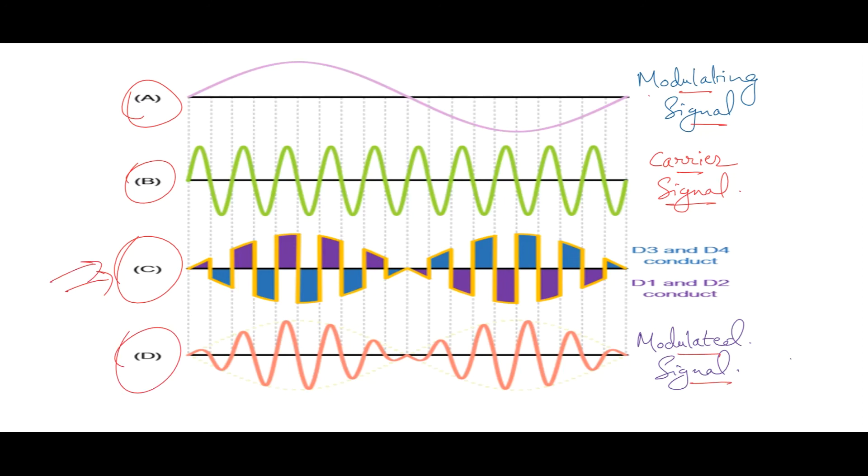In C waveform, the purple colored pulses appear when D1 and D2 are on and D3 and D4 remain open circuited. Likewise, the blue waveform appears when D3 and D4 are turned on and D2 and D1 remain open circuited. When both results are combined, it will take the shape of an amplitude modulated wave.